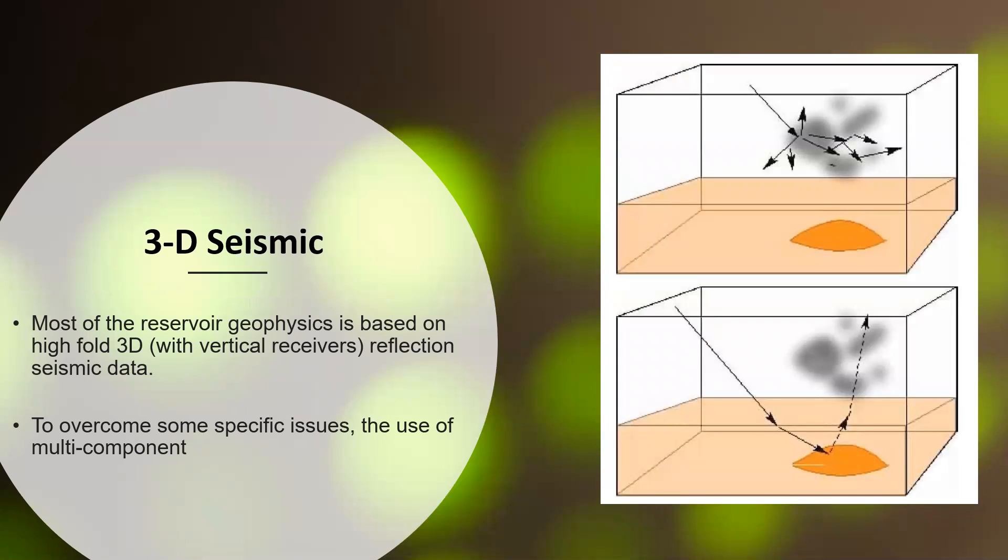The next tool is 3D seismic survey. Most of the reservoir geophysics is based on high fold 3D reflection seismic data with vertical receivers. But in particular, in order to image below the gas clouds that obscure P wave imaging of reservoir, converted waves are being used or multi-component seismic data is being used for this purpose. In the figure here, we can see the P wave seismic ray scattering because of velocity inhomogeneity caused by the pocket of gas results in an inability to image through the gas clouds.